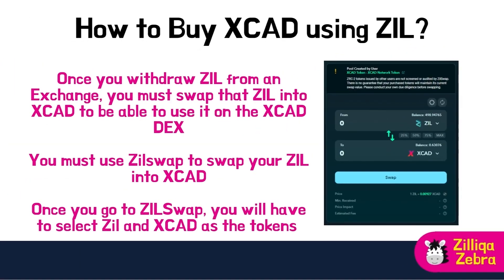Once you withdraw Zilliqa from an exchange, you must swap it into XCAD to use it on the XCAD DEX. There is currently no ZIL/XCAD pair on the XCAD DEX, so you must use Zilliqa Swap. Go to Zilliqa Swap, select Zilliqa and XCAD as the tokens, input the amount of Zilliqa you wish to swap — keeping some Zilliqa in your wallet to pay for gas fees. Once you are happy with the amounts, click the swap button and confirm the transaction in your wallet. When the transaction completes, you will automatically receive XCAD in your wallet.